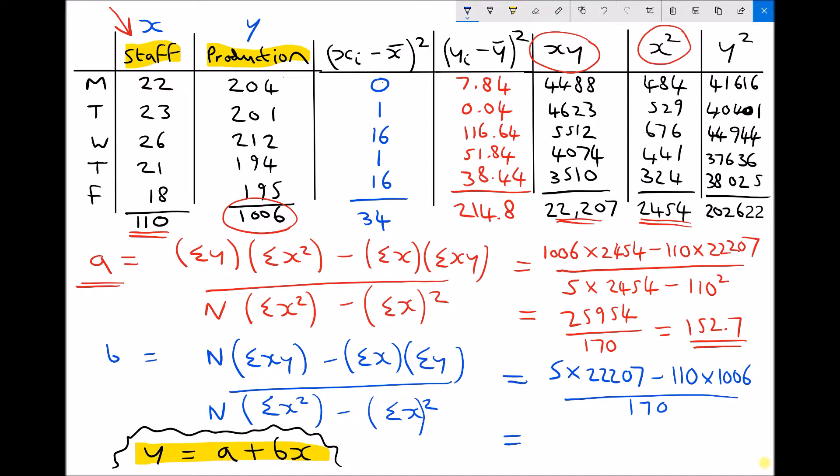The top of our fraction, running those numbers through the calculator, comes out to be 375. 375 divided by 170 gives us a value of b equal to 2.2 to one decimal place.